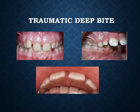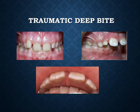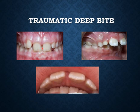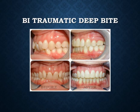The other type is traumatic deep bite, in which the deep bite is associated with impingement of the mandibular incisors into the mucosal-palatal area of the maxillary incisors. This is commonly seen in malocclusions with extremely deep bite, such as Class 2 malocclusion. The lower incisor edges cause trauma to the palatal mucosa.